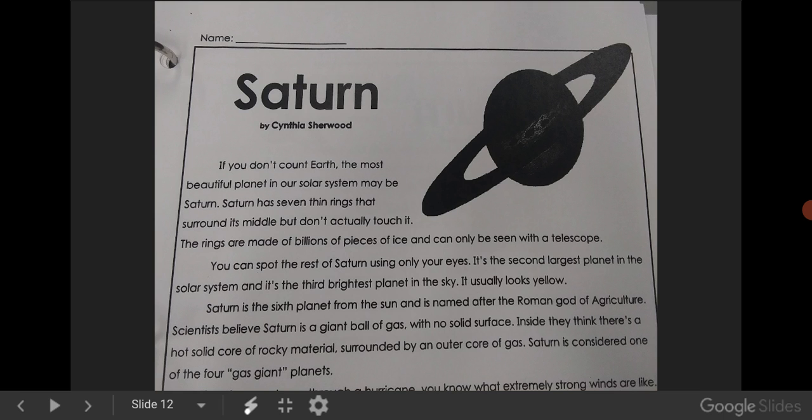Scientists believe Saturn is a giant ball of gas with no solid surface. Inside, they think there's a hot, solid core of rocky material surrounded by an outer core of gas. Saturn is considered one of the four gas-giant planets.